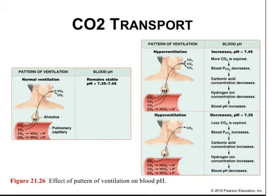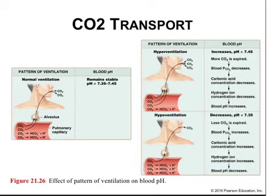Changes in the rate and depth of ventilation can quickly compensate for sudden or dramatic changes in blood pH. Respiratory alkalosis occurs if hyperventilation continues — hypocapnia, which is a lack of carbon dioxide, results in an increase in blood pH. Respiratory acidosis occurs if hypoventilation continues — hypercapnia is an increase in carbon dioxide levels that causes the blood to become more acidic.